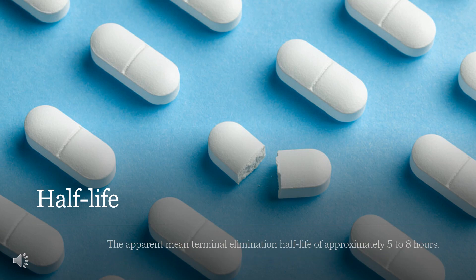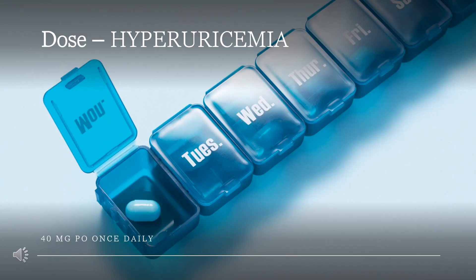Half-life. The apparent mean terminal elimination half-life is approximately 5 to 8 hours. Dose. The dose of this medicine will be different for different patients. For the chronic management of hyperuricemia in patients with gout or gouty arthritis, adults should take 40 mg PO once daily. The dose may be increased to 80 mg PO once daily if the serum uric acid concentration is more than 6 mg per deciliter after 2 weeks of therapy. Maximum dose is usually 80 mg per day PO; up to 120 mg per day has been studied in clinical trials.